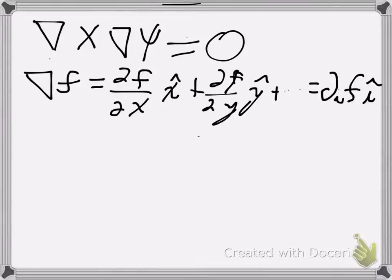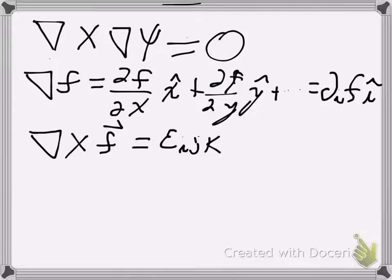And then we also need to know what a curl is. So a curl of a vector f would be the Levi-Civita tensor, epsilon i j k, partial k of the kth component of the vector.